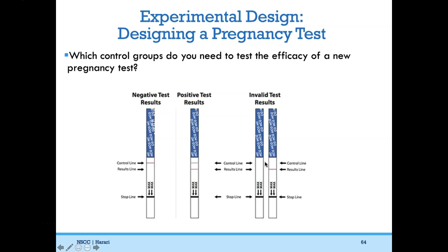On pregnancy tests, there are two lines. One is a control line — it picks up something in urine that reacts regardless of whether the person is pregnant, testing if the pregnancy test is even working. If you don't get a control line, the test may be expired. This is a built-in positive control to make sure the test works. If there's no second line, that's a negative test result; if you see two lines, that's a positive test result.